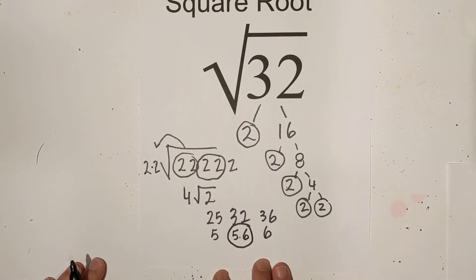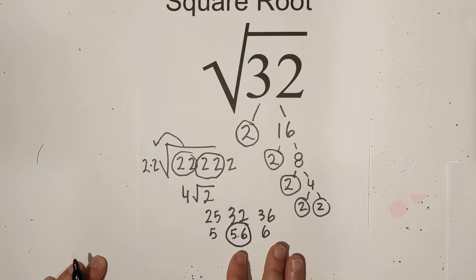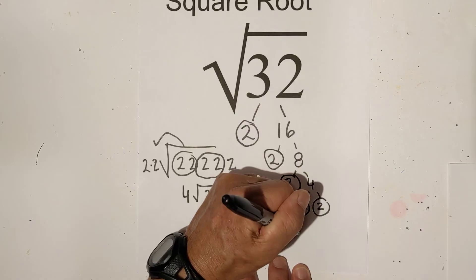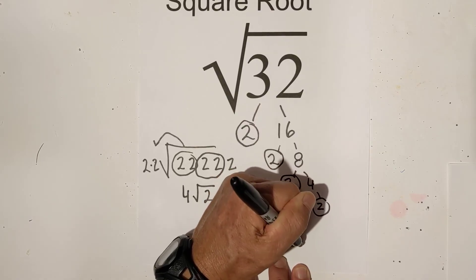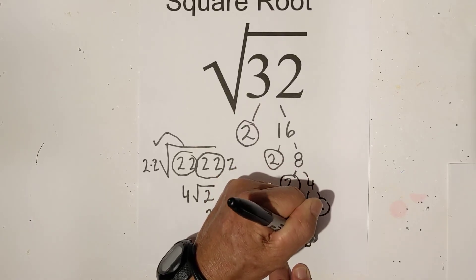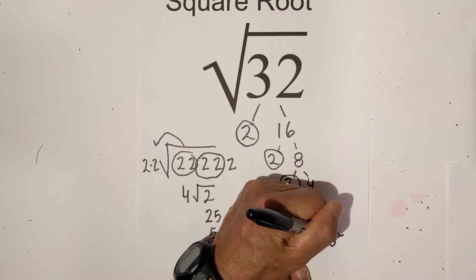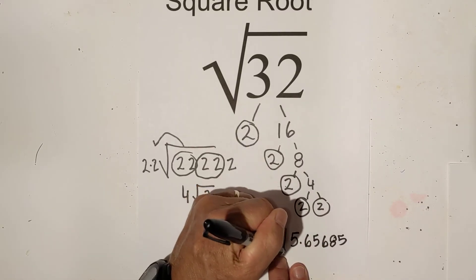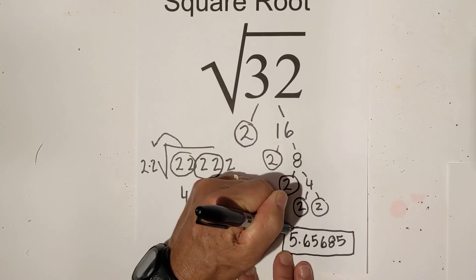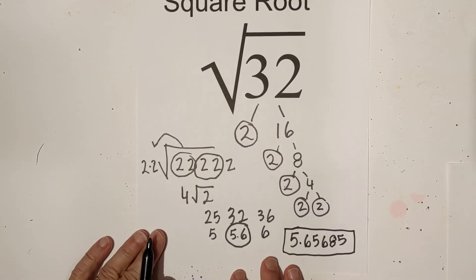Now, if you would like it in decimal form, like if you put it in the calculator, you will get an irrational number: 5.65685. It is not an exact number. There it is in decimal form.